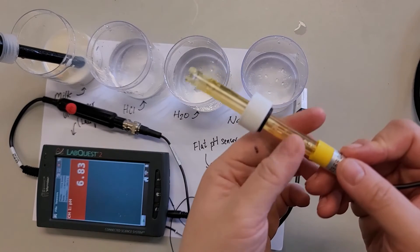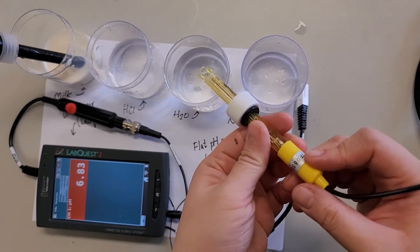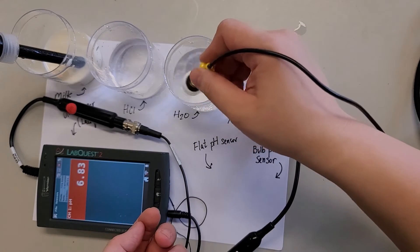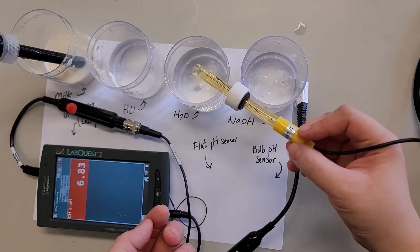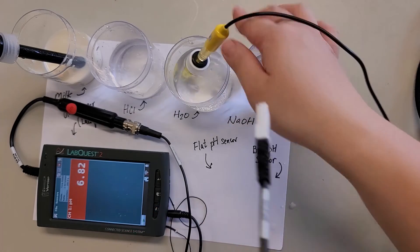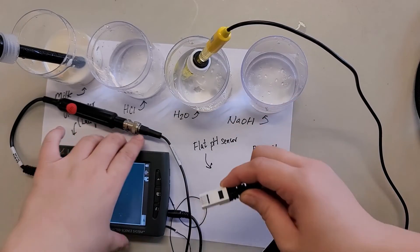Again, we need to make sure the bulb is submerged in the buffer solution, make sure it doesn't dry up. Because you think about it, pH is actually measured inside a solution, so it must not dry up. Now I'll put this one into the sensor now.